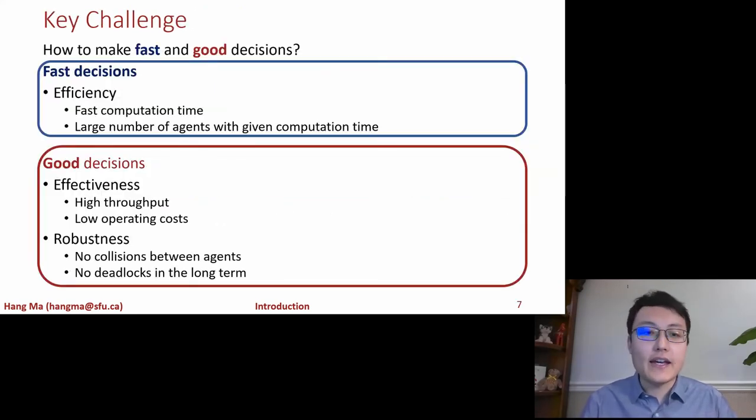Given the current state of AI, how do we direct its research towards solving these applications of large-scale multi-agent systems? In viewing these applications as multi-agent planning problems, there's a key research question that cuts across all of them, namely how to make fast and good decisions. Here by fast decisions I'm referring to efficiency of the algorithms, namely fast computation time and large number of agents within a given computation time. And good decisions I'm referring to performance measures such as effectiveness that means high throughput of the system and low operating cost of the system. For example, few robots are needed for a given throughput if we have high effectiveness. And robustness that means no collisions should happen between robots and no deadlocks should happen if we run the system for a long period of time.